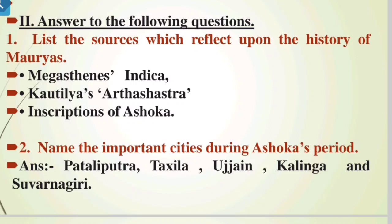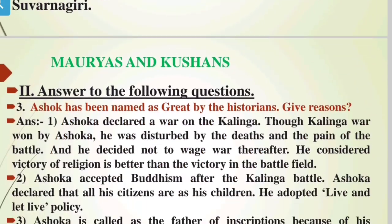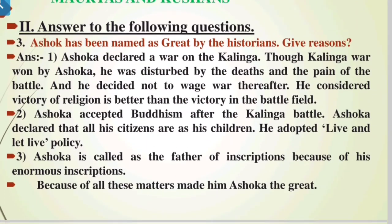First source is Megasthenes' Indica. Second: Kautilya's Arthashastra. Third: Some of the inscriptions of Ashoka. Next question: Name the important cities during Ashoka's period. Answer: Patliputra, Takshila, Jain, Kalinga, and Suvarnagiri.